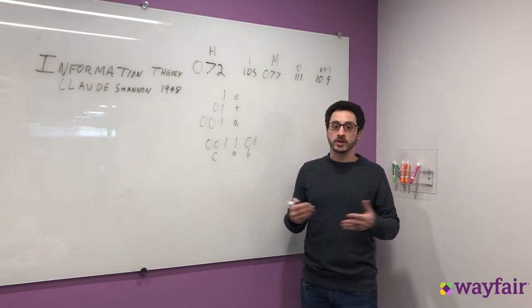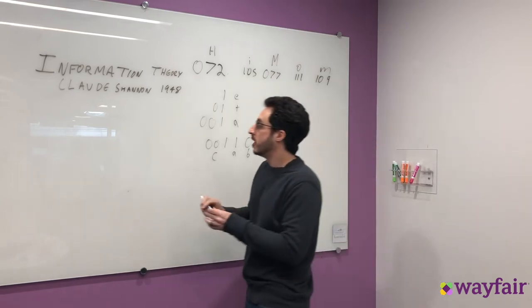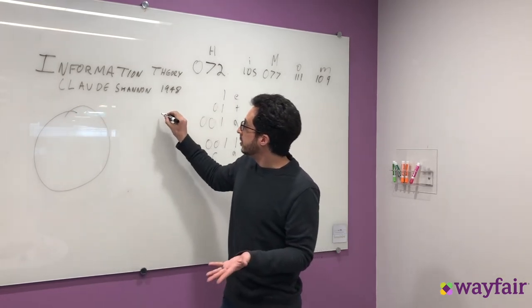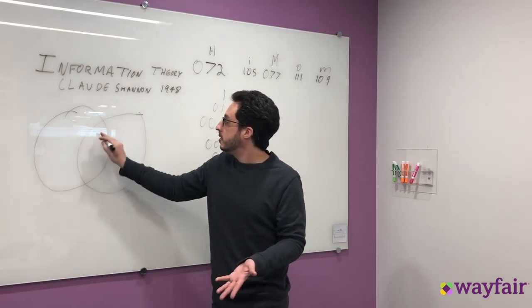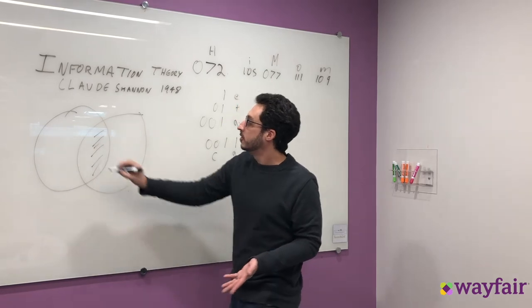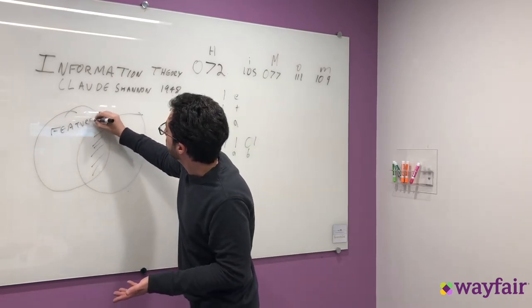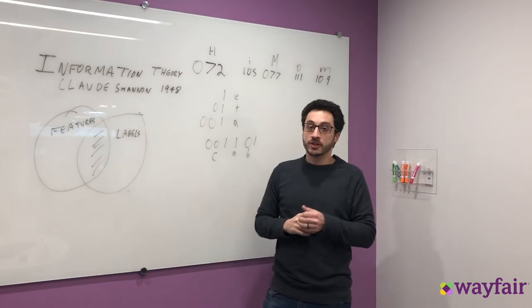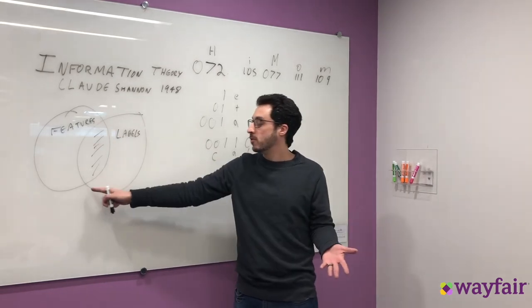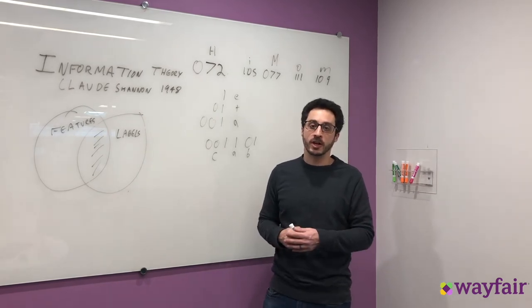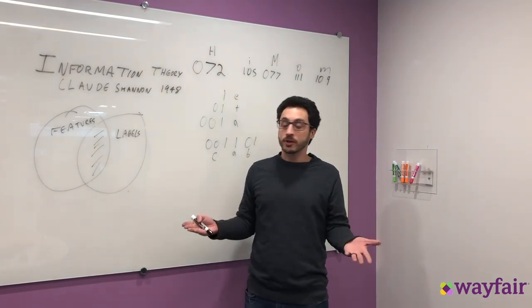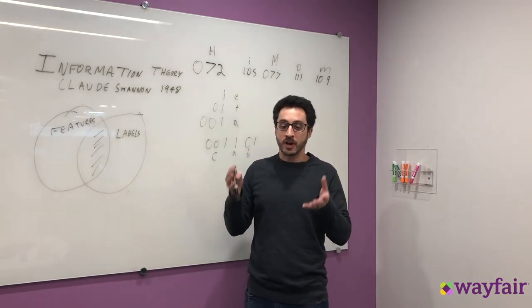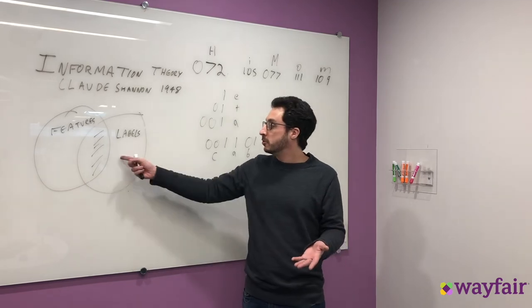So the thing that is going to govern this is mutual information. If you imagine that all the information contained in features are a ball, and now all of the information contained in the labels are some other ball, and there's some information that these two things share. So this is known as the mutual information between the two. Now, you can imagine a situation where the features are completely independent of the labels. There is actually no overlap here, pure noise. The best accuracy you're ever going to be able to get is 50%, zero mutual information. You can also imagine that the labels are in fact a subset of the features. These balls overlap entirely. Your classification accuracy should be 100%, and the mutual information is in fact one.